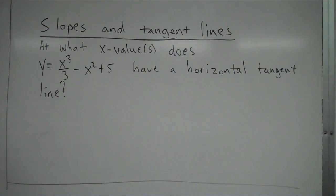Alright, let's go ahead and take a look at a question here. It says, at what x values does y equals x cubed over 3 minus x squared plus 5 have a horizontal tangent line?